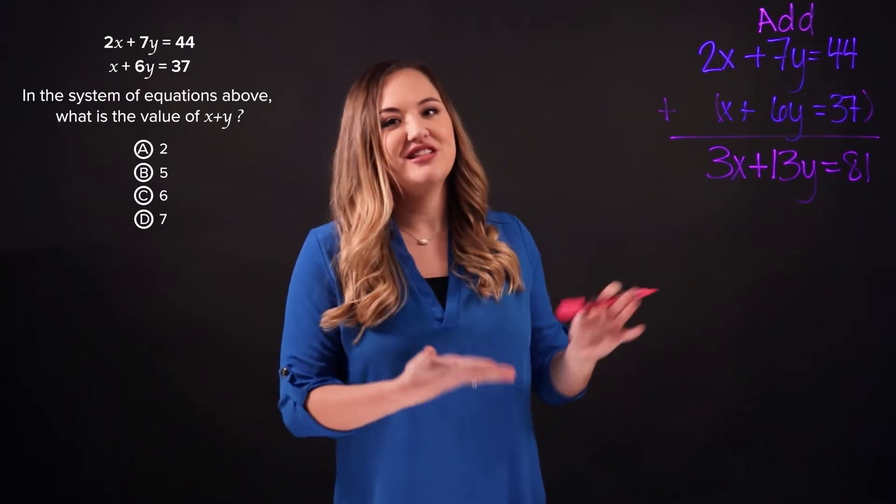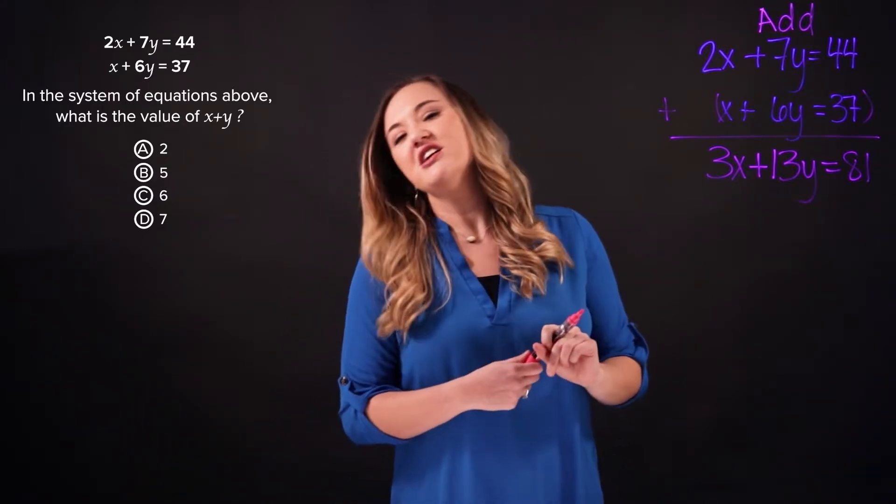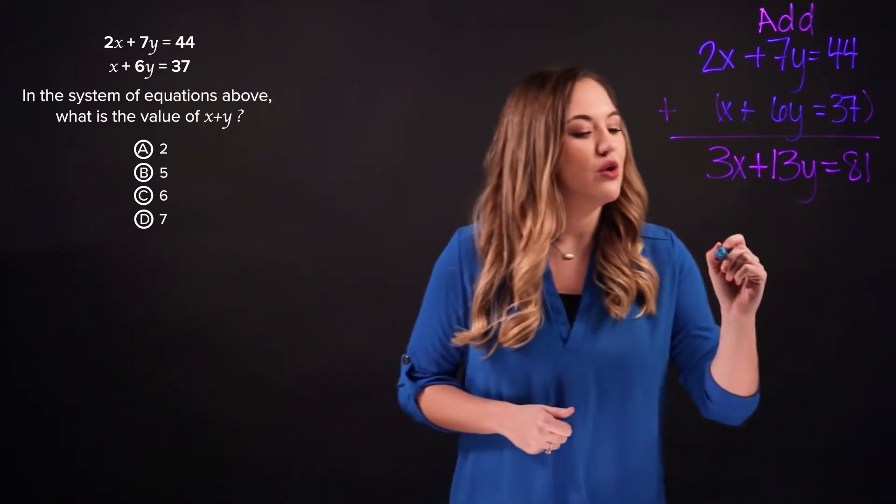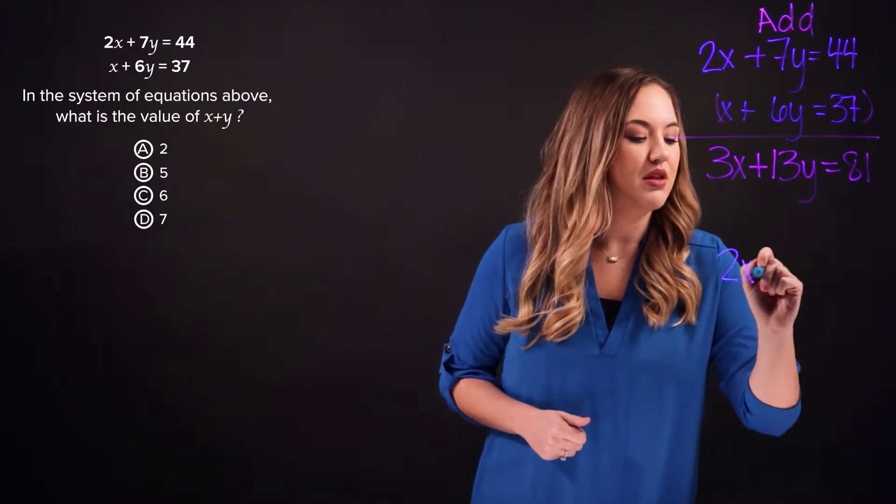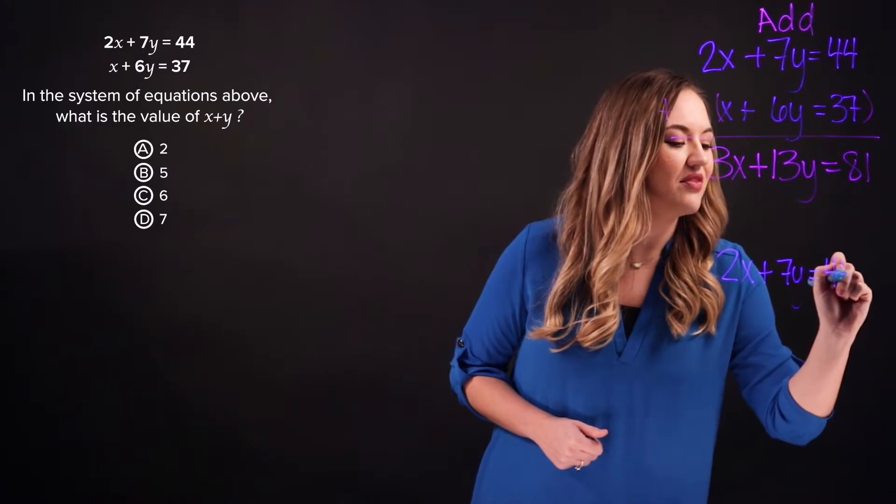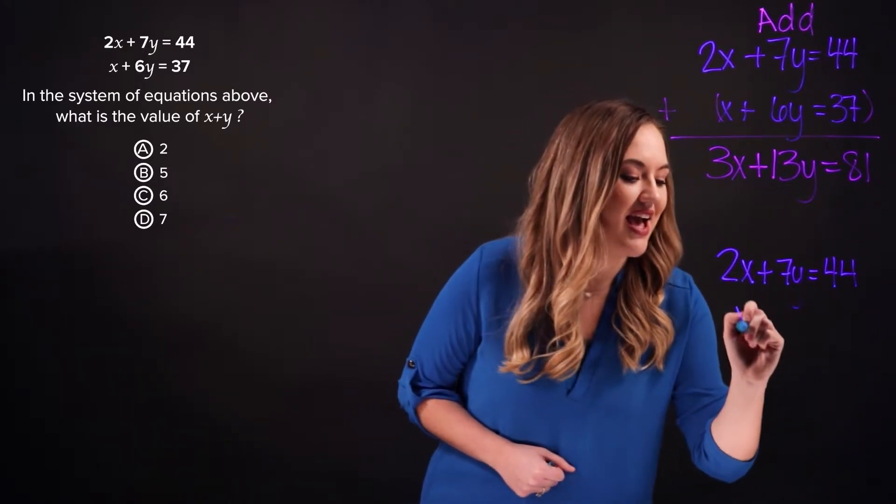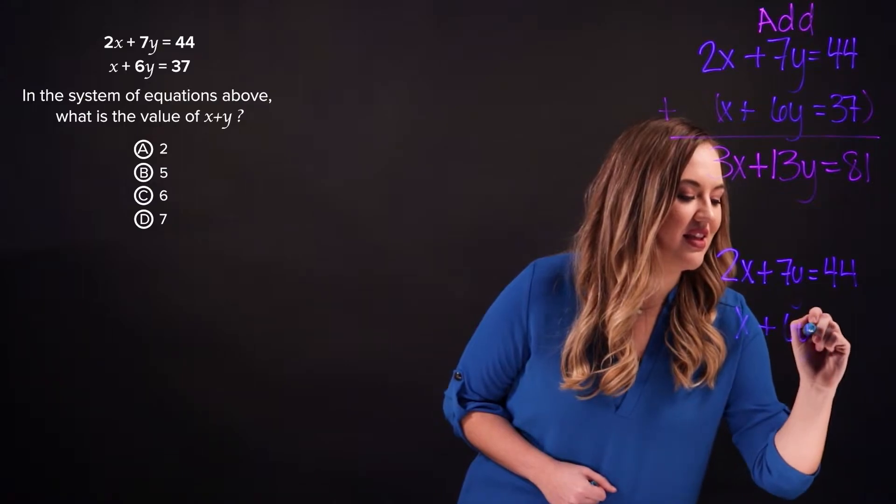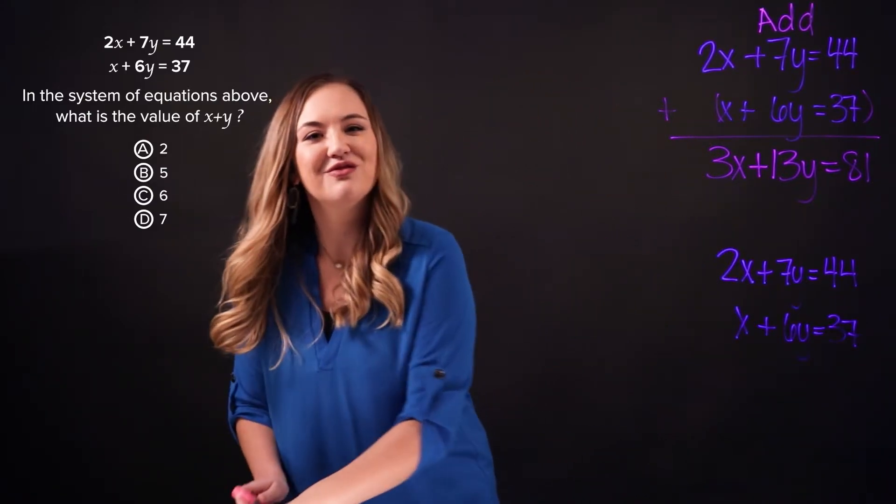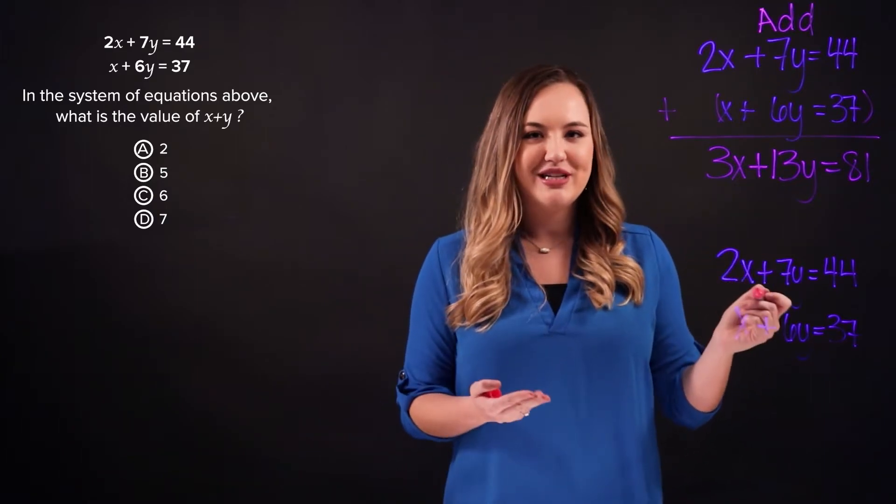Now that's not the desired expression x plus y, so let's check what happens if we subtract them. So 2x plus 7y equals 44, and x plus 6y equals 37. Again we're going to check what happens when we subtract them.